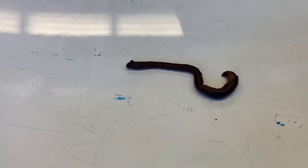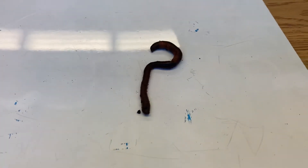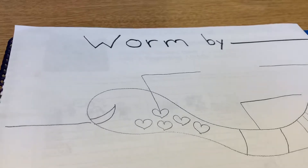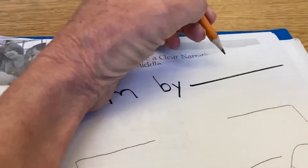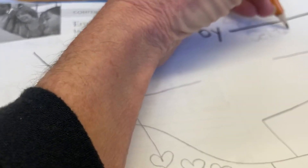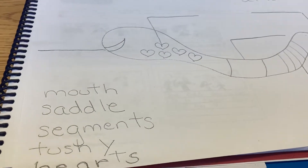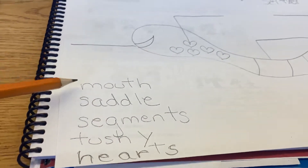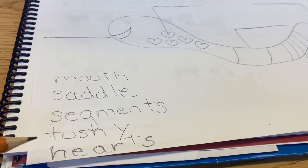Looks like a question mark now, doesn't it? This worm has made itself into the shape of a question mark — very cool, who knew! Okay, so I have a diagram over here and it says 'worm by,' and for me it's gonna be 'scientist Seltzer.' I'm gonna write my name, and you're gonna put your name. Your paper might look a little different than mine when you get it.